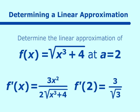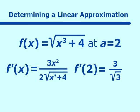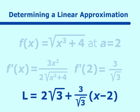You can leave it like that. So to make our linearization formula, we have L is equal to f of a, which we know to be 2 square roots of 3, plus f prime of a, which is 3 over the square root of 3, times x minus 2, which is a. That is the equation of the tangent line, but it's also our linearization formula.